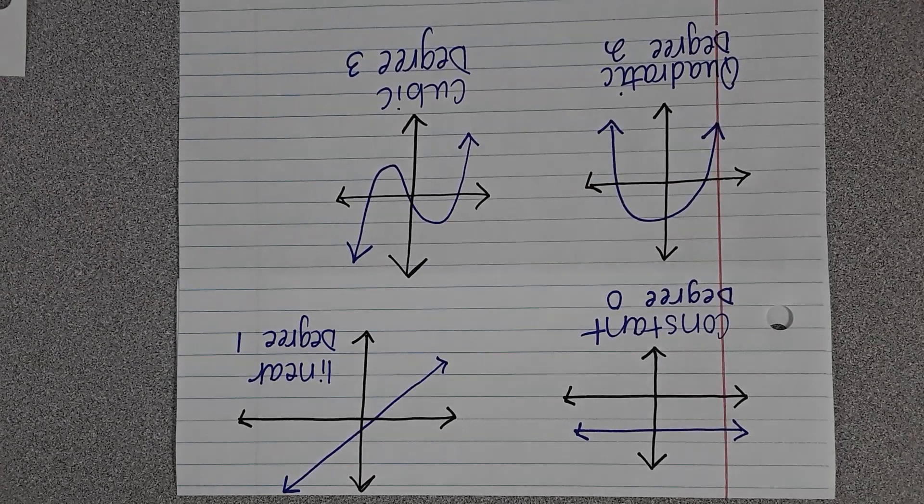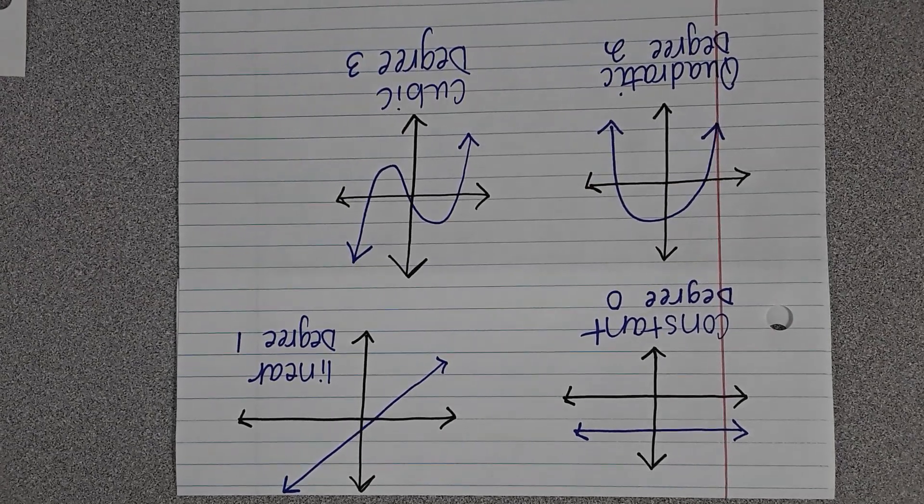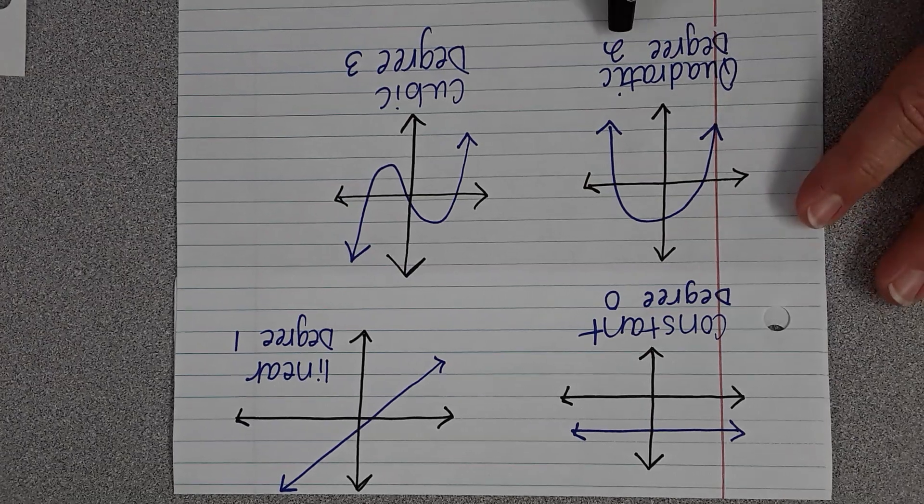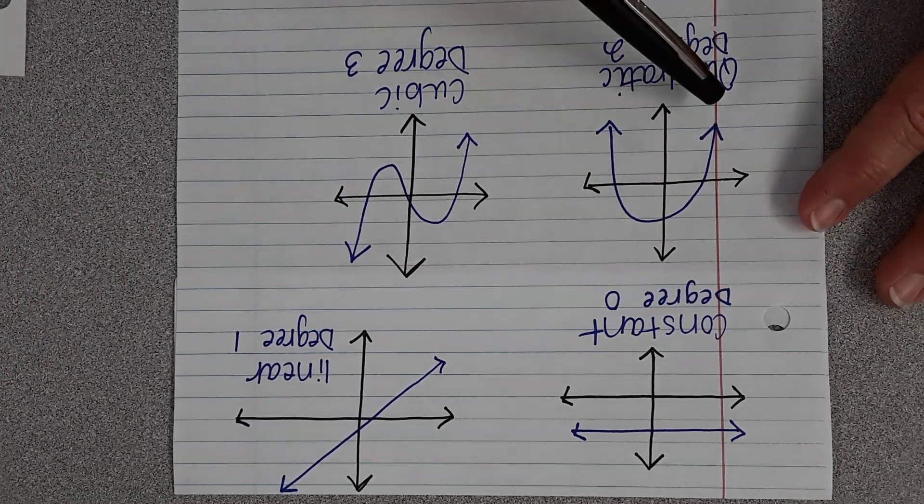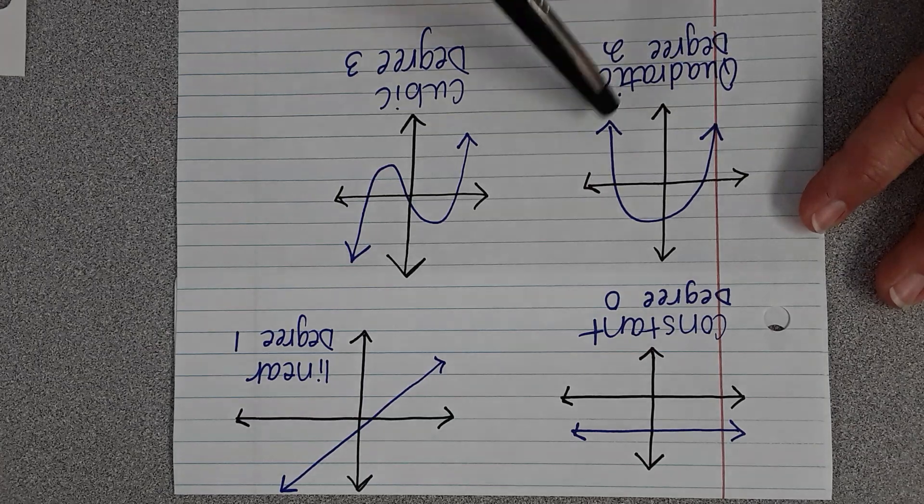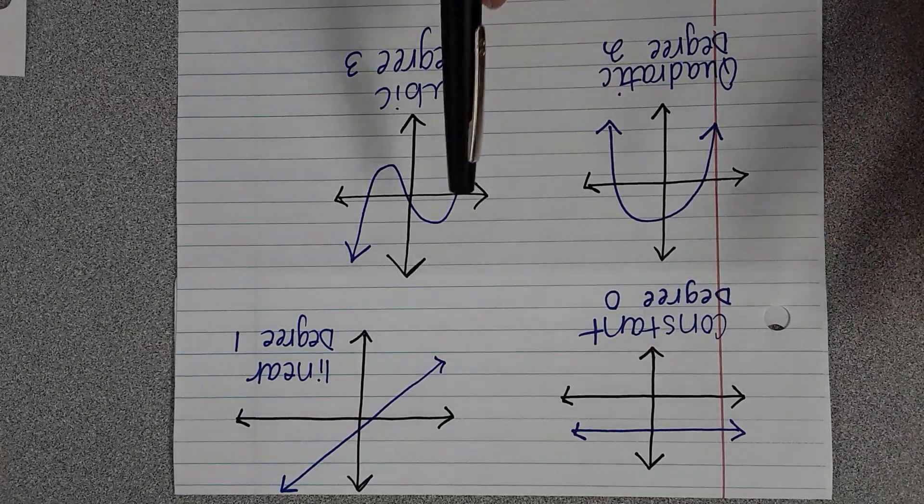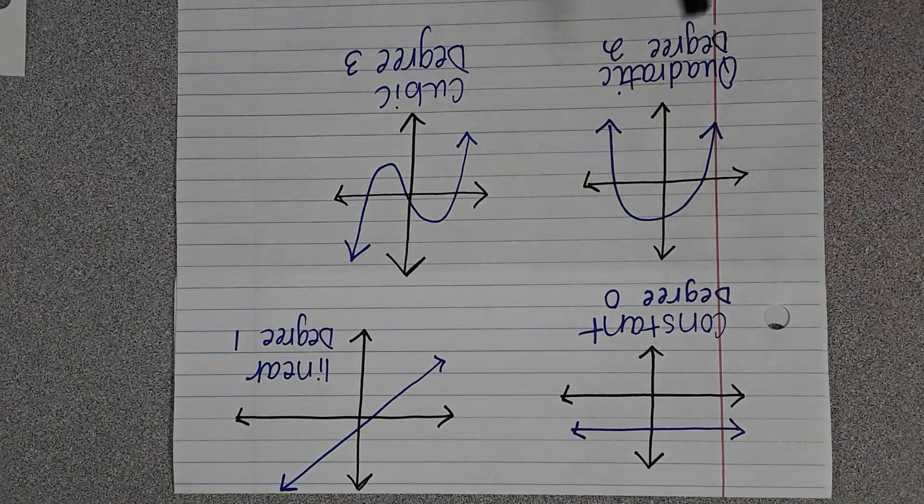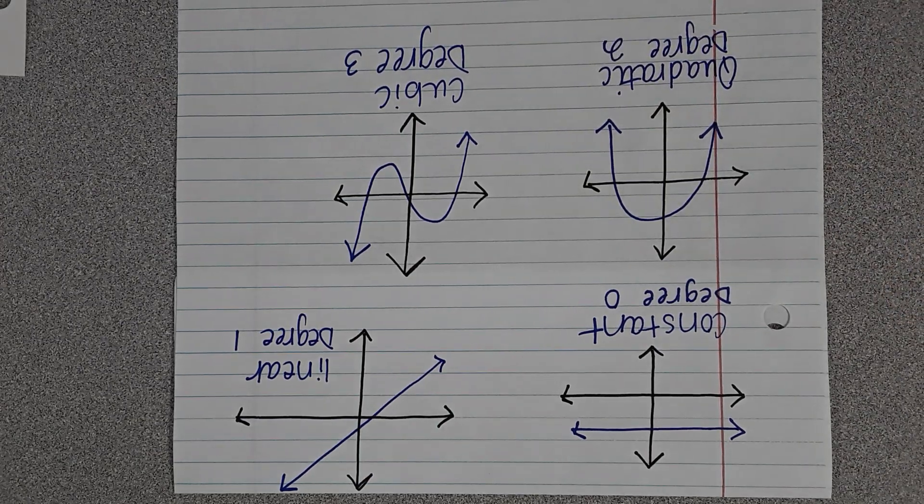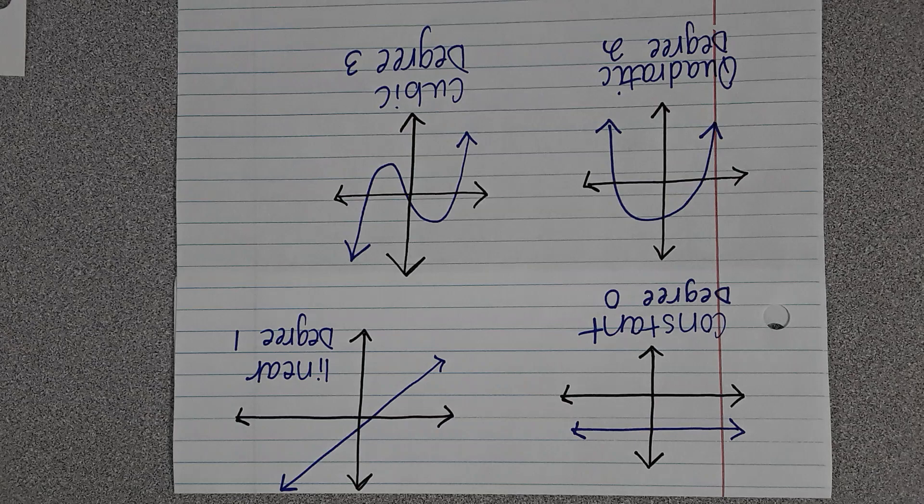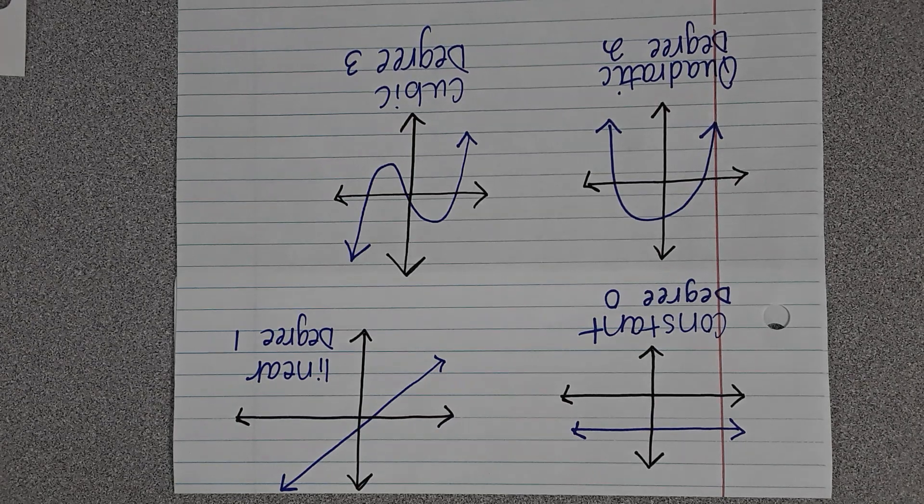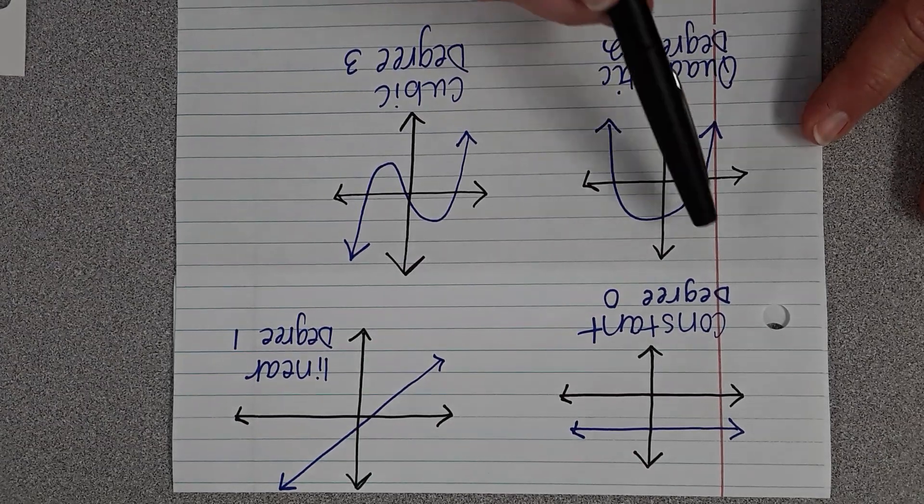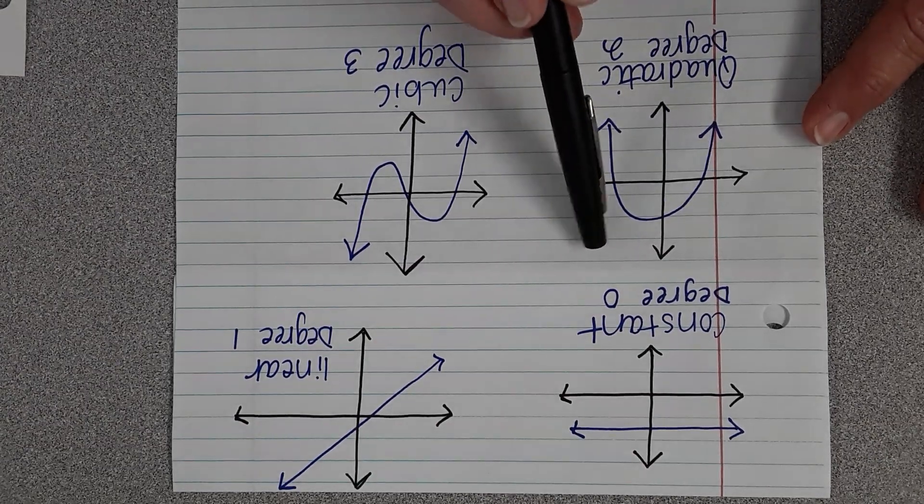In a quadratic, this is where we start talking about end behaviors. If it's an even degree, how it starts and how it ends is the same. So if it starts down, it will end down. Anytime you have an even degree function—2, 4, 6, 8, 10—however it starts, if it starts down, it ends down. If it starts up, it will end up.